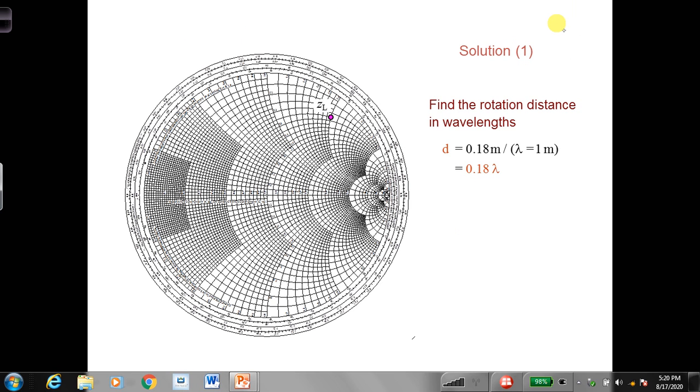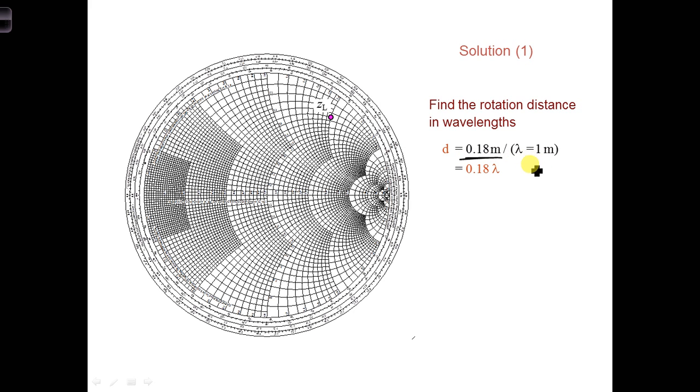First we need to determine how far in wavelengths this load impedance dot needs to be rotated. So first we need to find the distance in terms of wavelengths. We take 0.18 meters, divide by the wavelength, which here is a convenient 1 meter, and we find we need to rotate 0.18 wavelengths.